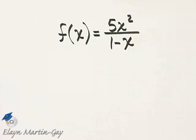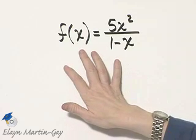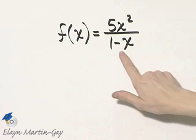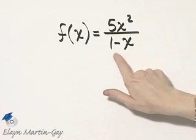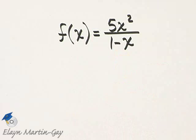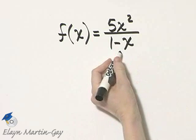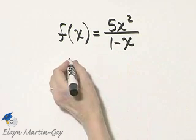I'd like to find the domain of this rational function. We're going to assume that the domain is all real numbers except for those values that make the denominator zero. Because remember, if the denominator is zero, then the rational expression is undefined. So let's see what values make this denominator zero.